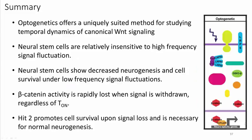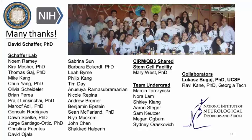In summary, optogenetics offers a uniquely suited method for studying temporal dynamics of canonical Wnt signaling. Neural stem cells are relatively insensitive to high-frequency signal fluctuations but show decreased neurogenesis and cell survival under low-frequency fluctuations. Beta-catenin activity is rapidly lost when signal is withdrawn, regardless of T-on. HIT2 promotes cell survival upon signal loss and is necessary for normal neurogenesis. I would like to thank my mentor David Shaffer and the Shaffer lab, collaborators Lucas Bugay, Andrew Bremmer, and Robby Kane, as well as Mary West, and acknowledge support from an F32 fellowship from NINDS.